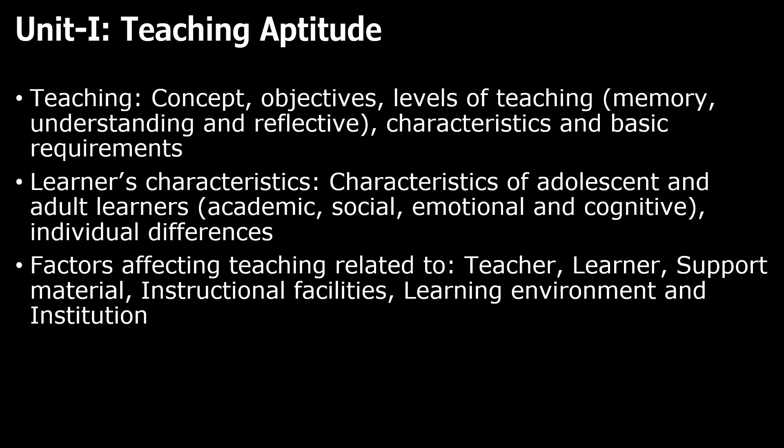Coming to the teaching aptitude part of paper one, under teaching you have to understand the concept, objectives and levels of teaching — memory, understanding and reflective kinds of teaching. Then you have the characteristics and basic requirements in teaching. You also have to understand learners' characteristics — characteristics of adolescent and adult learners in the academic, social, emotional and cognitive levels, including individual differences within each of these levels. Then you have to cover factors affecting teaching related to teacher, learner, support material, instructional facilities, learning environment and institution.